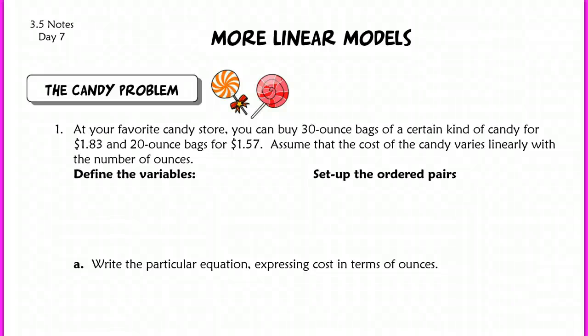Alright, this lesson is for section 3-5. We're going to be working with one more linear model today. We're going to answer some questions that I think are kind of difficult sometimes because they're very abstract and conceptual. So the math portion of this problem should be very easy for you since we're just going to be writing equations of lines. The rest of the parts that we have to answer some specific questions, this is a little bit trickier. So make sure you guys have your calculator handy. We're going to do some calculations here. This candy problem says at your favorite candy store you can buy 30-ounce bags of a certain kind of candy for $1.83 and 20-ounce bags for $1.57. Then it says here, assume that the cost of the candy varies linearly with the number of ounces.